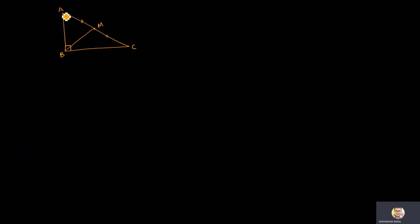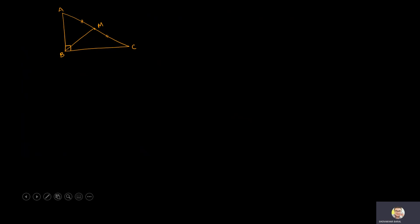We need to prove that BM is equal to AM is equal to CM — that is, the distance from each vertex A, B, and C to the midpoint M is equal. So we have to prove AM is equal to BM is equal to CM.